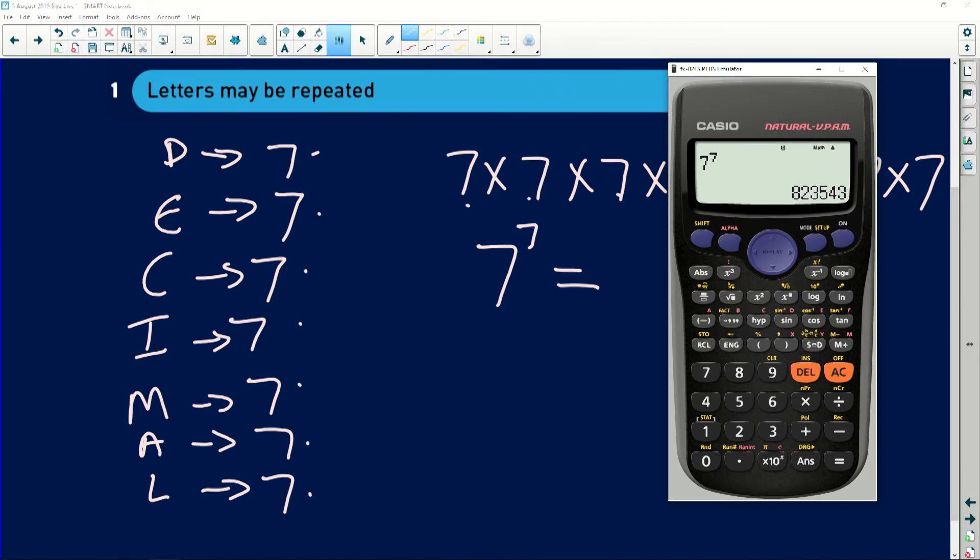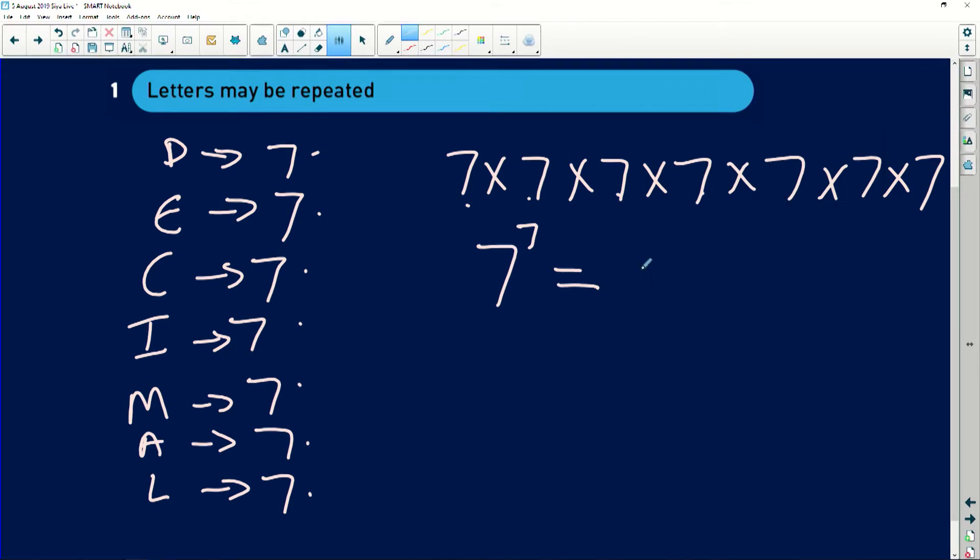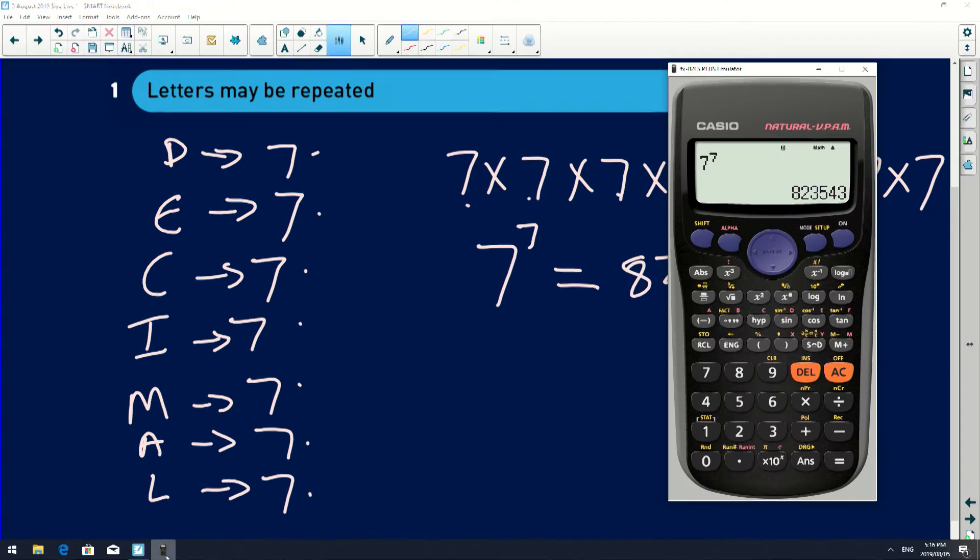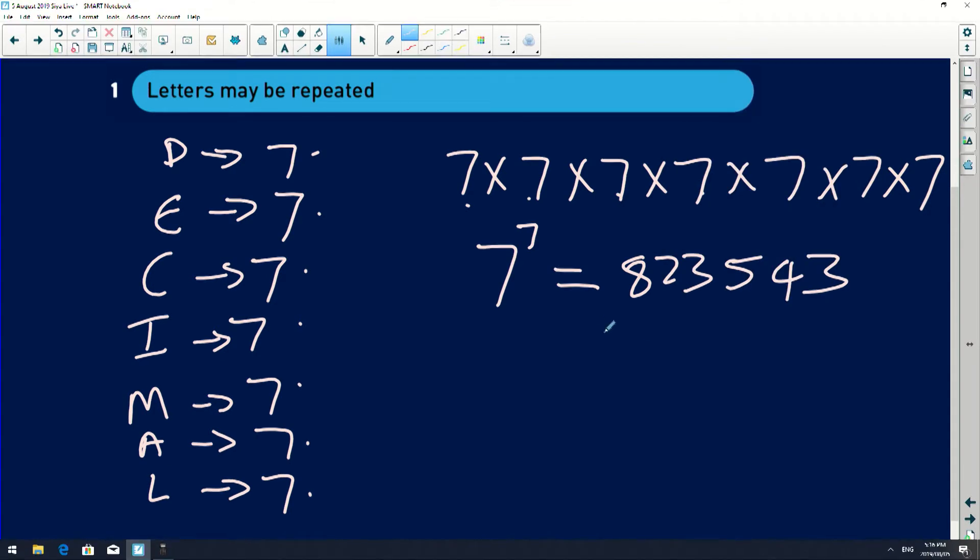So that will then be 823543. So this is how many arrangements I can have if I'm repeating my letters.